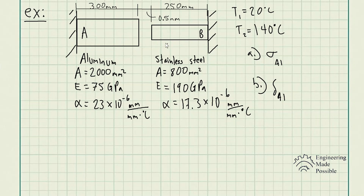This problem is similar to the statically indeterminate problems we solved previously. You have two restraints — two walls — and both rods are going to thermally expand. There is only a 0.5 millimeter gap. If they expand further than this, a force is going to be developed, and that is when we can solve for the thermal stress as well as the deformation of the aluminum rod.